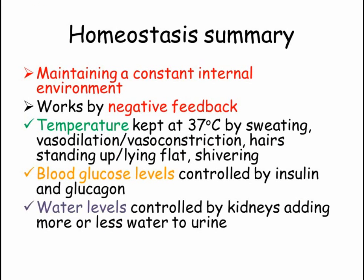So, homeostasis is about keeping your internal environment constant. This is important so that your cells, and particularly the enzymes inside them, work at their optimum level. All three examples of homeostasis we have looked at work through negative feedback, so that the body reacts in the opposite direction to the change in order to keep the conditions constant. In this way, we have seen how temperature is controlled to keep it at 37 degrees C, how blood glucose levels are controlled by the hormones insulin and glucagon, and how water levels are controlled by changing how much water is added to the urine produced by the kidneys.